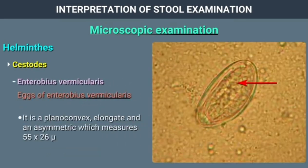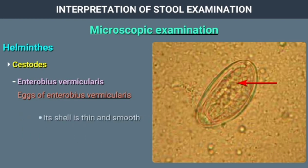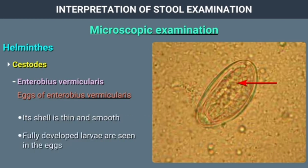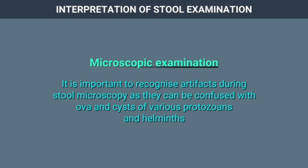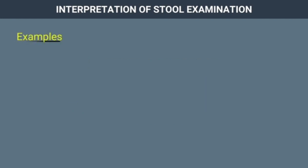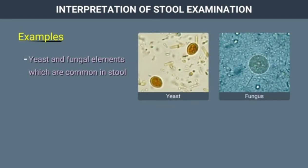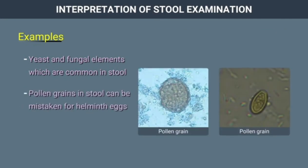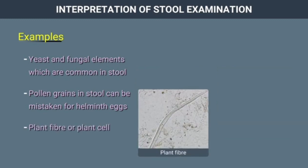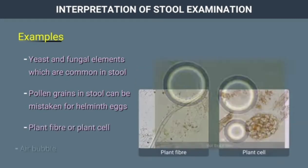Enterobius vermicularis: The egg is plano-convex, elongate, and asymmetric, measuring 55 by 26 microns. Its shell is thin and smooth, with fully developed larvae visible inside. It is important to recognize artifacts during stool microscopy as they can be confused with ova and cysts of various protozoa and helminths. Common artifacts include yeast and fungal elements, pollen grains, plant fiber or plant cells, and air bubbles.